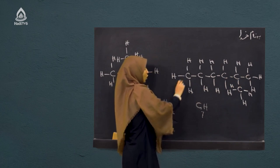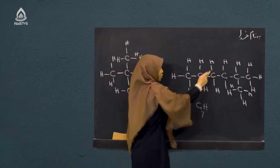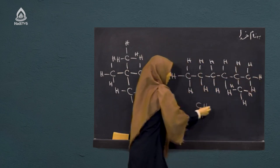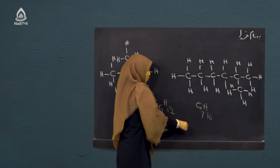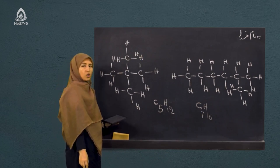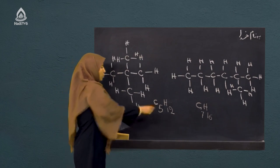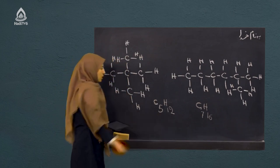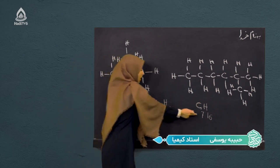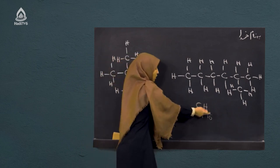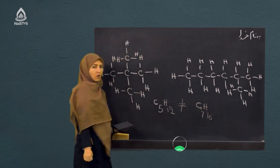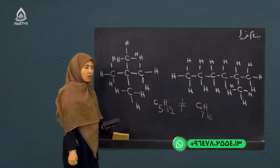تعداد اتم‌های کاربون مرکب دوم: یک، دو، سه، چهار، پنج، شش، هفت - C7. تعداد اتم‌های هایدروجن: سه، چهار، پنج، شش، هفت، هشت، نه، ده، یازده، دوازده، سیزده، چهارده، پانزده، شانزده - H16. فرمول مالیکولی مرکب دوم می‌شه C7H16. دو فرمول مالیکولی با هم مقایسه کنیم: یکسان و مشابه نمی‌باشد. پس دو مرکب ایزومیر یکدیگر به حساب نمی‌آیند، چون فرمول مالیکولی یکسان ندارند.